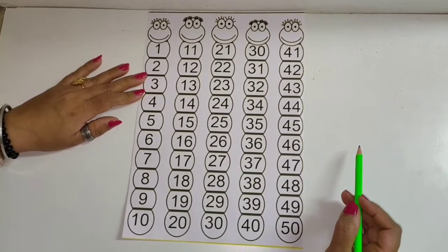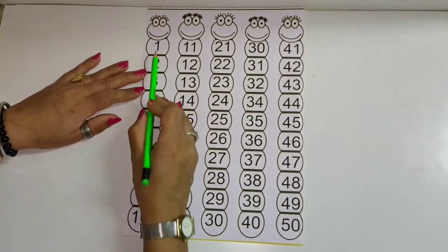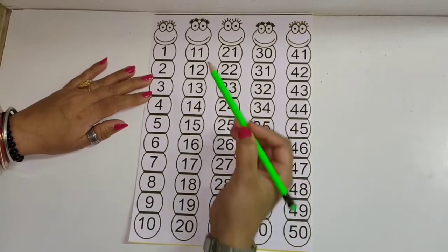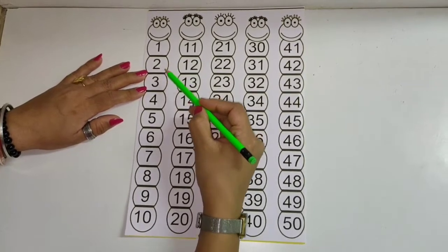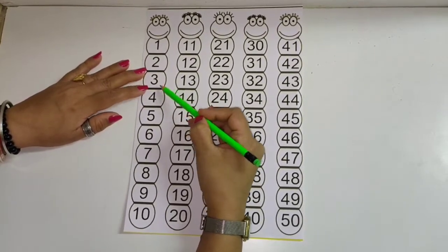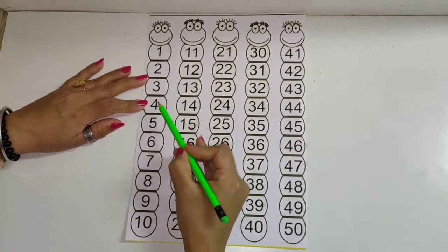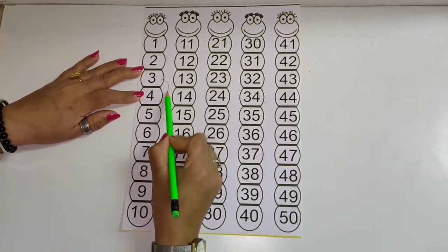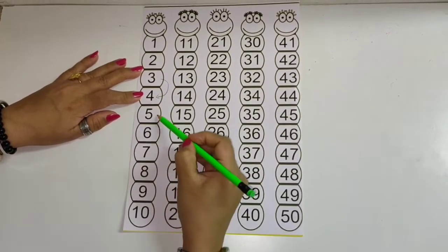So as you know children, you have learnt how to write numbers from 1 to 50 in order. When you write 1, 2, 3, the number after the given number is called the after number. For example, after 3 comes 4, so 4 is your after number. Then we have 5, 6, 7, 8, 9, 10.